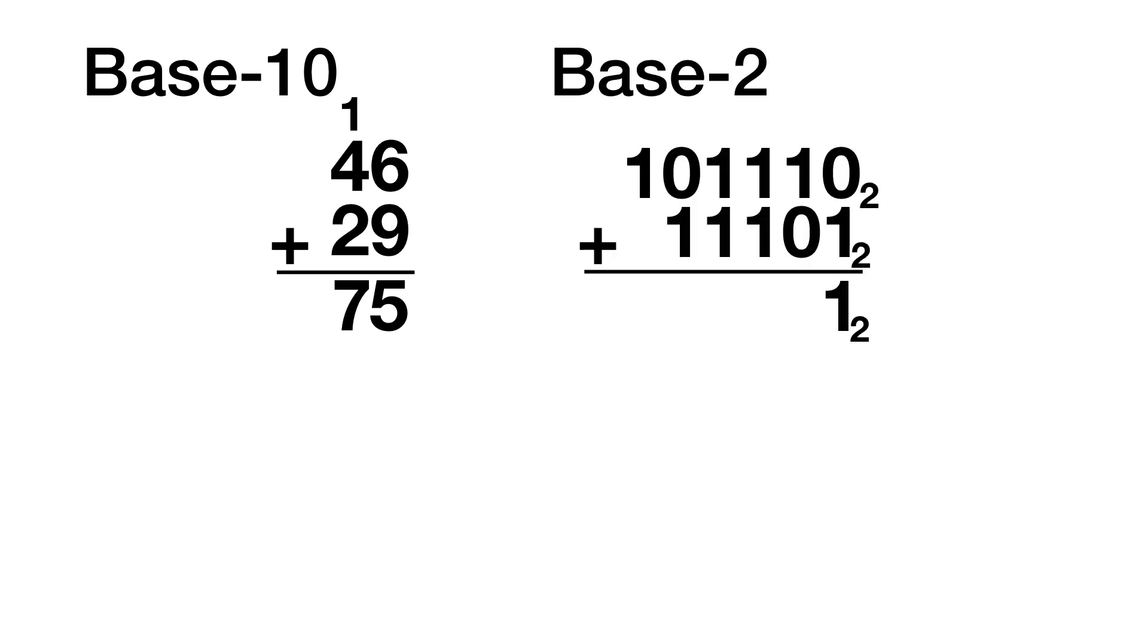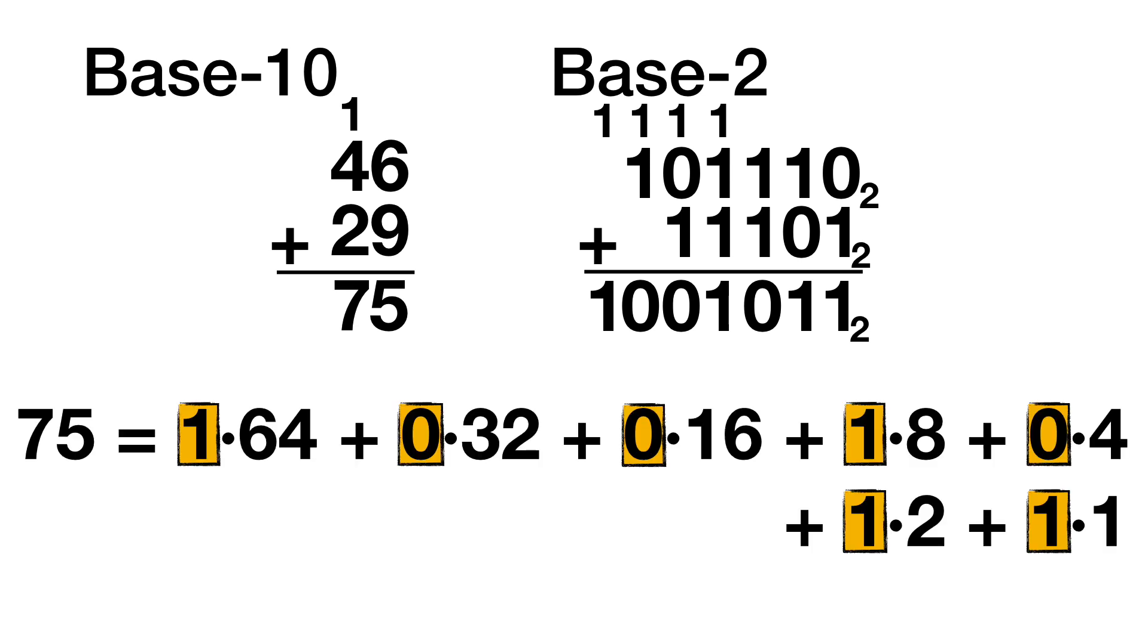Let's try the calculation in base 2. 0 plus 1 is 1, 1 plus 0 is 1, 1 plus 1—that's 10, so we write the 0, carry the 1. 1 plus 1 plus 1 is 3, which we write as 11, so I write a 1 and carry a 1. 1 plus 1 is 10, so carry the 1. 1 plus 1, 10, we carry the 1, and we just bring it down, leaving us with 1001011. Sure enough, if we write the number 75 in base 2, we'll find that its binary expansion is indeed 1001011.